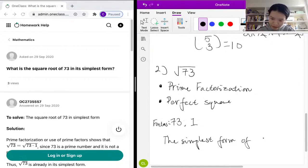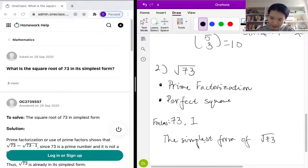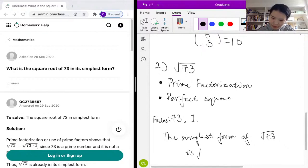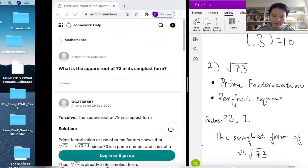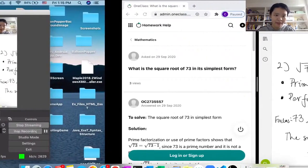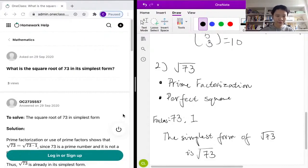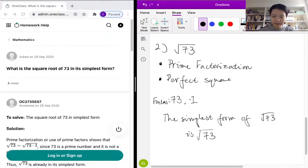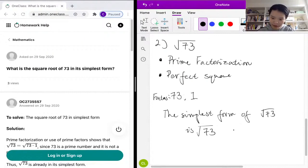The square root of 73 is just the square root of 73. You can't simplify it any further than that - it's already in its simplest form because the number 73 is prime.